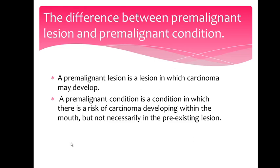A pre-malignant lesion is a lesion in which carcinoma may develop — it can change from pre-malignant into carcinoma. In the case of a pre-malignant condition, it is a condition in which there is a risk of carcinoma developing, a risk of becoming malignant, but it's not really a lesion developing within the mouth — not necessarily in the pre-existing region.